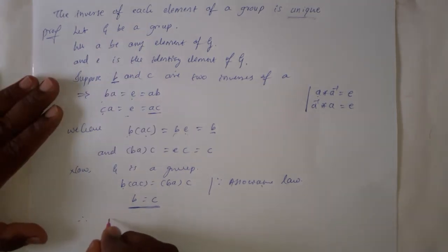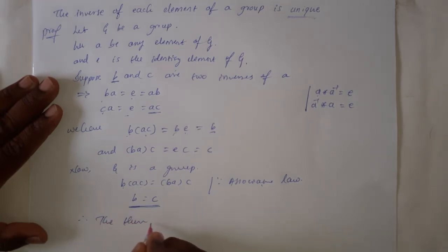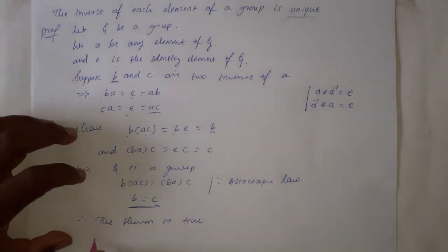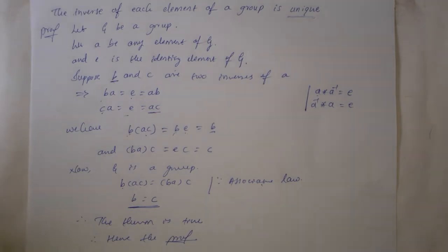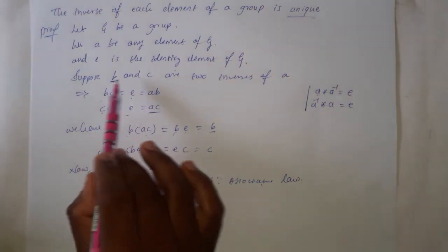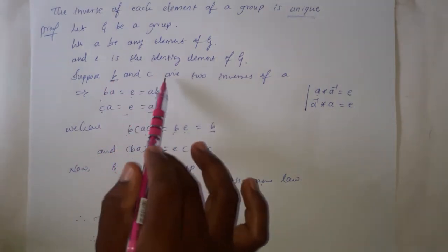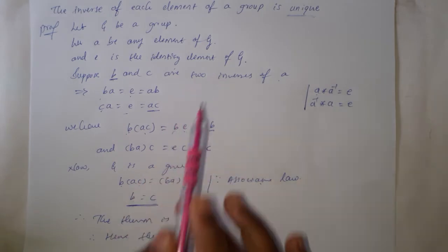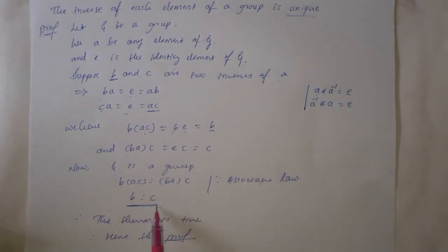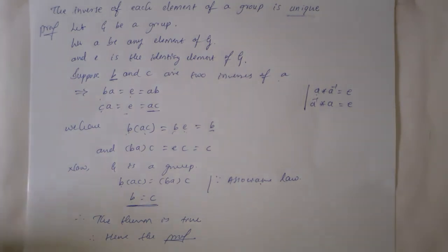Therefore the theorem is proved. We have proved that the inverse of each element of a group is unique by considering two different elements and assuming they are both inverses of a. Finally we proved these two distinct elements are the same, i.e., b = c. Hence the inverse of each element of a group is unique.